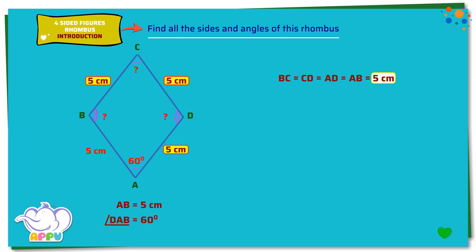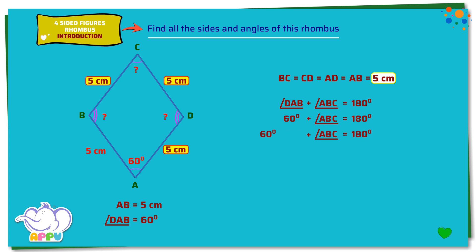Let's find angle ABC. We know that the sum of each pair of angles between two parallel sides is 180 degrees. Angle DAB plus angle ABC equals 180 degrees. We subtract 60 degrees from both sides. We get angle ABC equals 180 minus 60, so angle ABC equals 120 degrees.